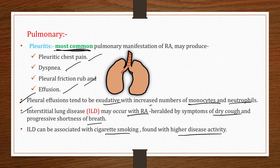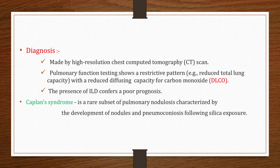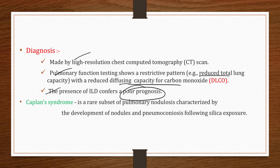ILD in RA is diagnosed by high-resolution chest CT (HRCT) along with pulmonary function testing, which shows a restrictive pattern — meaning reduced total lung capacity and reduced diffusion capacity for carbon monoxide. The presence of ILD in RA patients confers a poor prognosis.